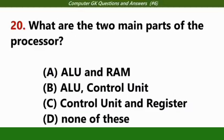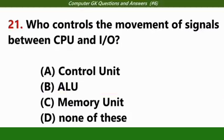What are the two main parts of the processor? Answer B, ALU Control Unit. Who controls the movement of signals between CPU and input output? Answer A, Control Unit.